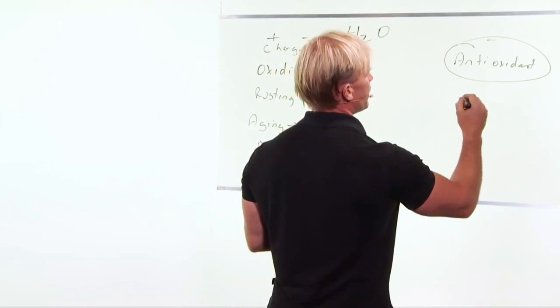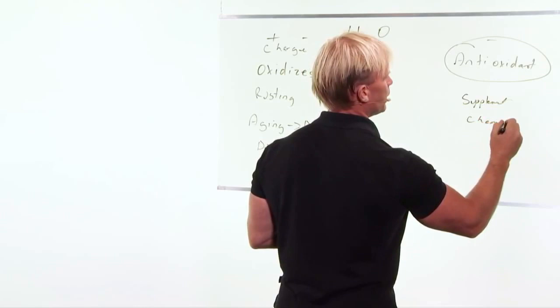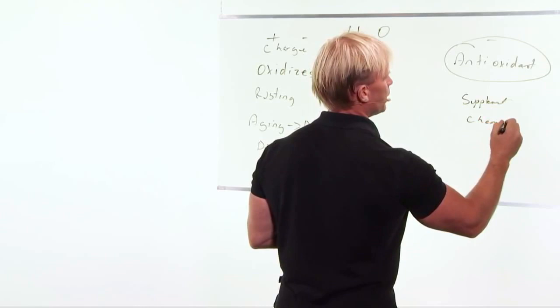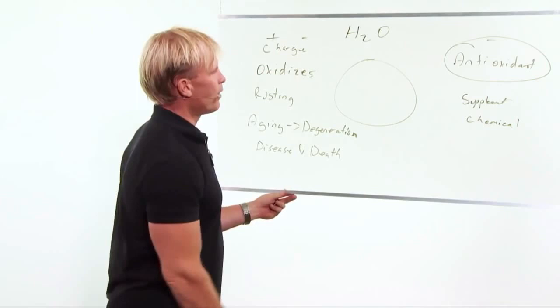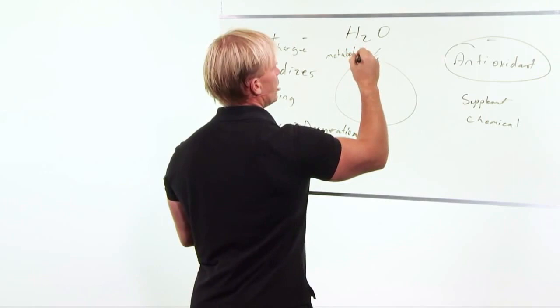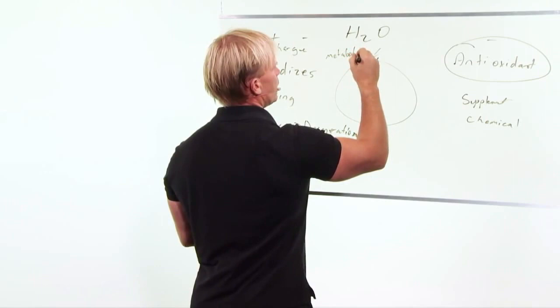The thing is, with a supplement like green foods or powder or something, you're getting a chemical form. And it has to go through this whole long cycle. Here's your cell. What happens if you have a positively charged ion that interacts with the cell, whether that's created from metabolic waste, from metabolism?